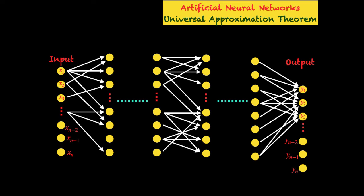To begin understanding the back propagation algorithm, we first need to assign some notation so that our mathematical expressions are easy to follow. We begin by labeling all the layers: we have capital L number of layers, marked from 1, 2, and so on up to L. The input layer is number 1 and the output layer is number capital L, and in between you have layers labeled small l minus 1, small l, small l plus 1, and so on. Capital L has to be a minimum of 3 because you need at least one hidden layer, but there is no upper limit.